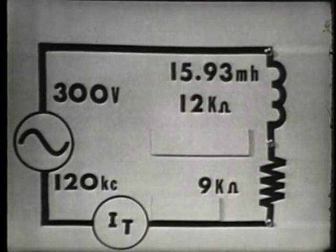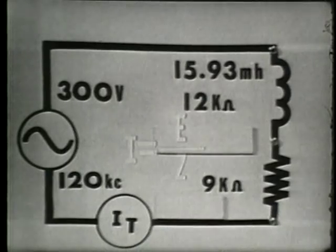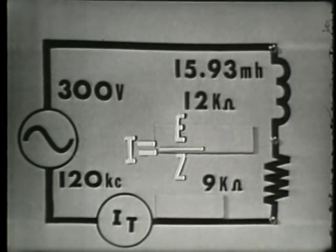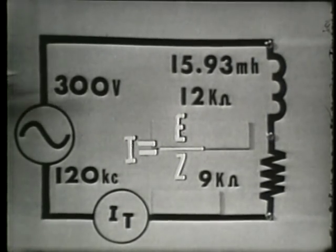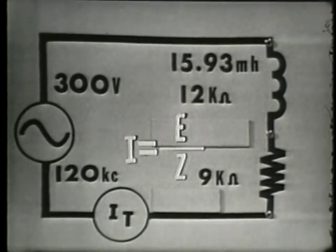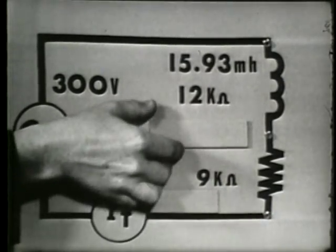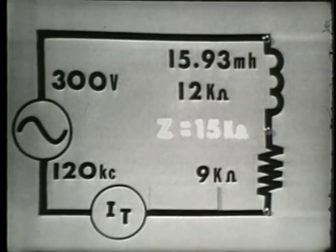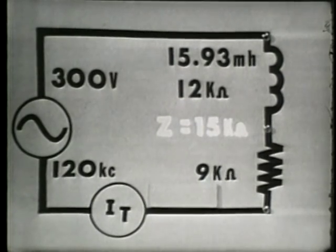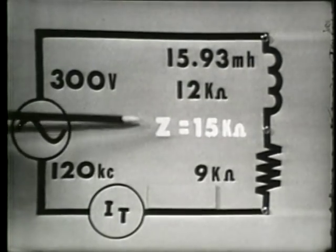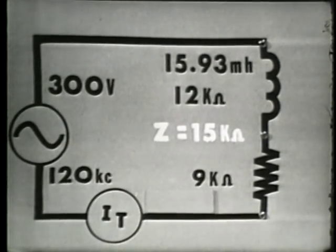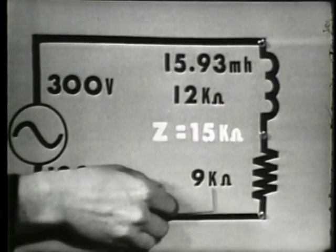By establishing the total impedance in our circuit, we can now determine the amount of current that is flowing and the voltage drops across the resistor and across the coil. Using Ohm's law, current is equal to E — the voltage applied, 300 volts — divided by total impedance, which is the vector sum of R and X of L. As we found from our vectors, Z is equal to 15 K ohms, so 300 volts divided by 15 K ohms gives us a current flow of 20 milliamps.